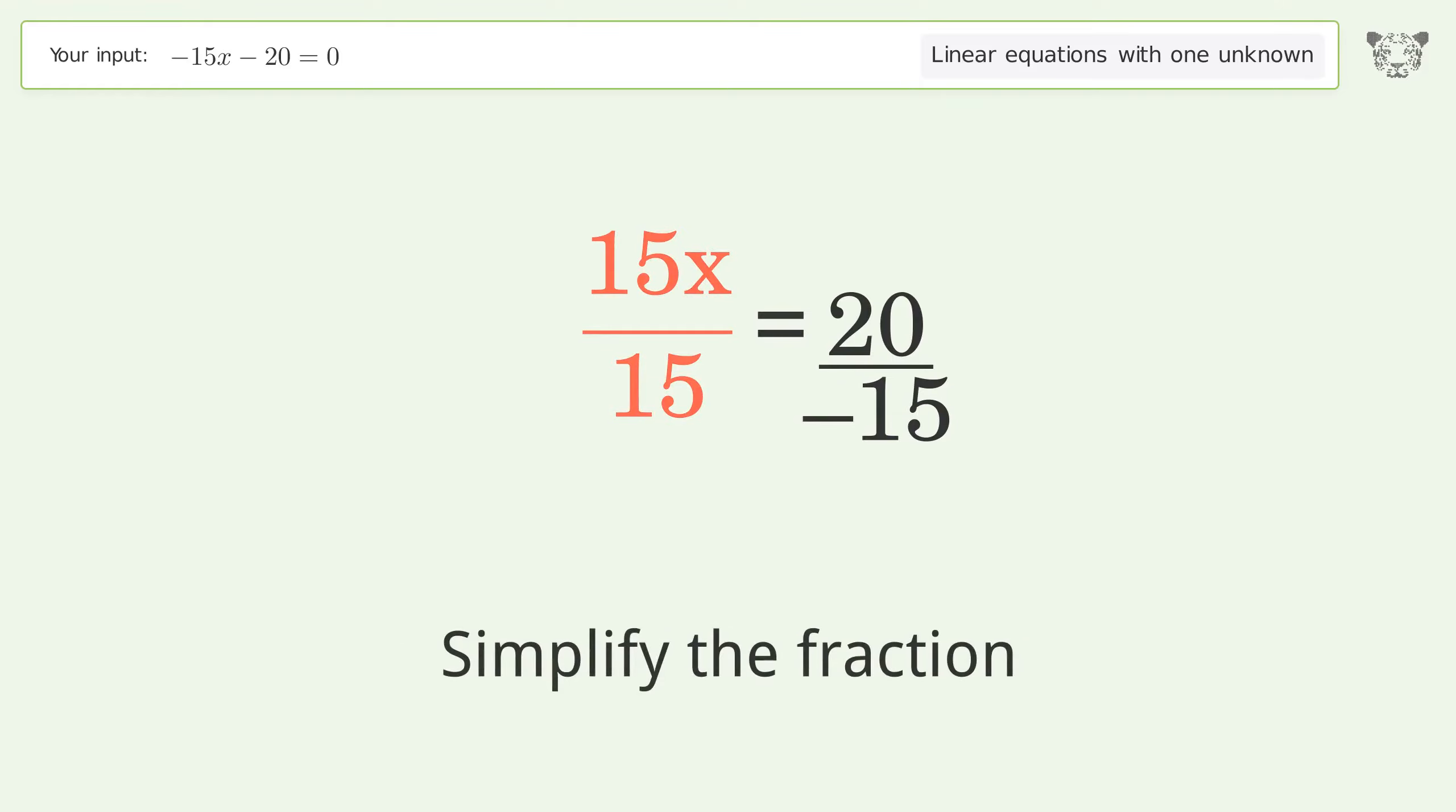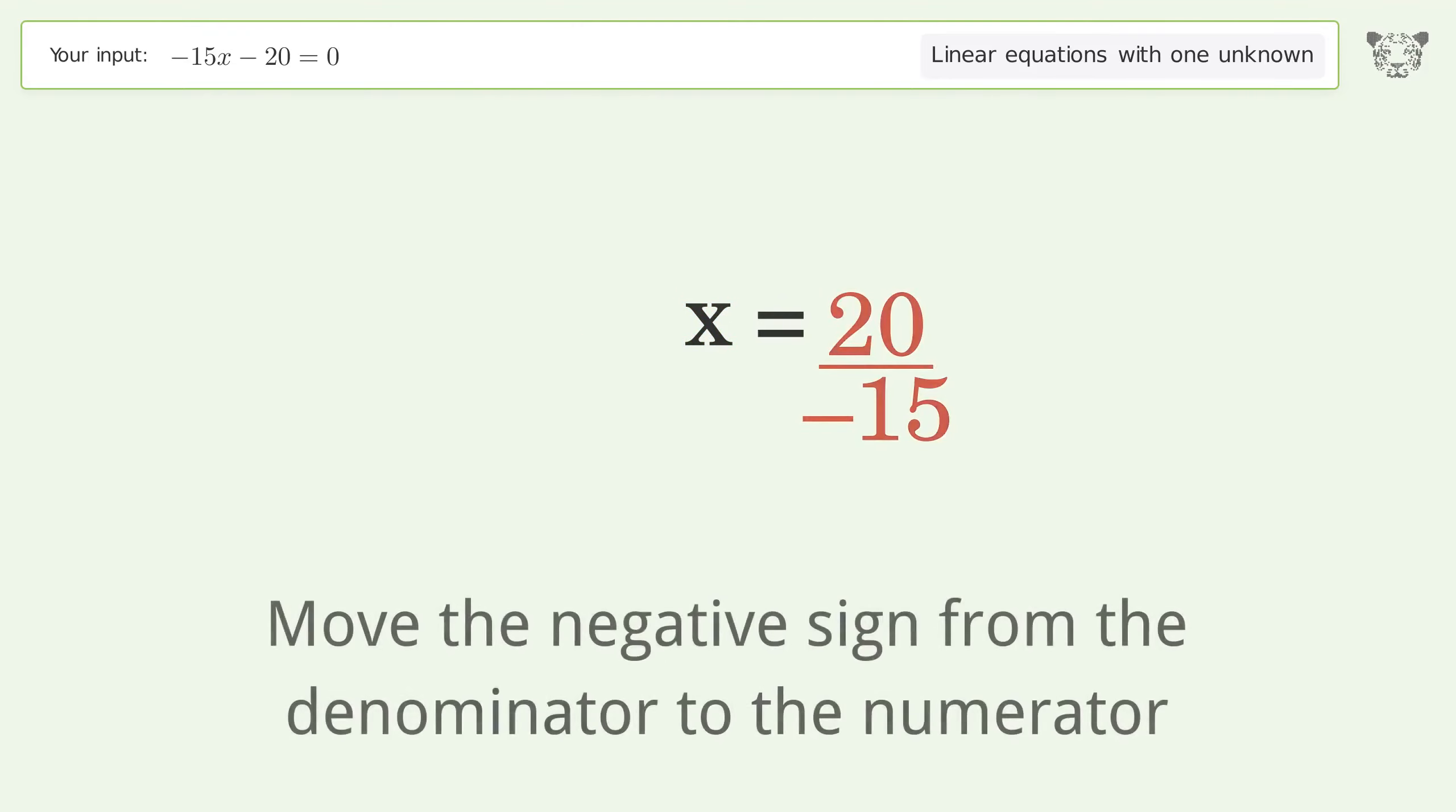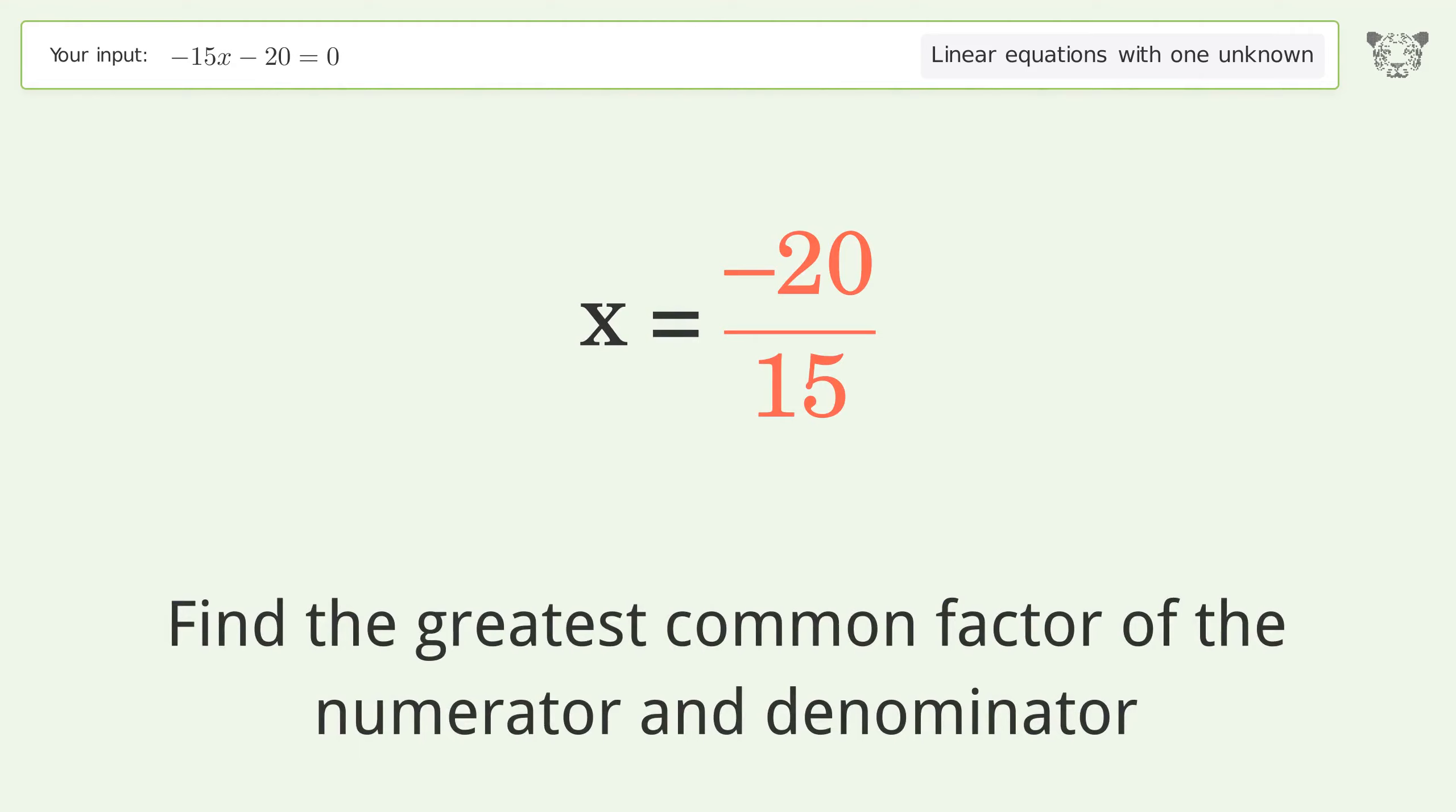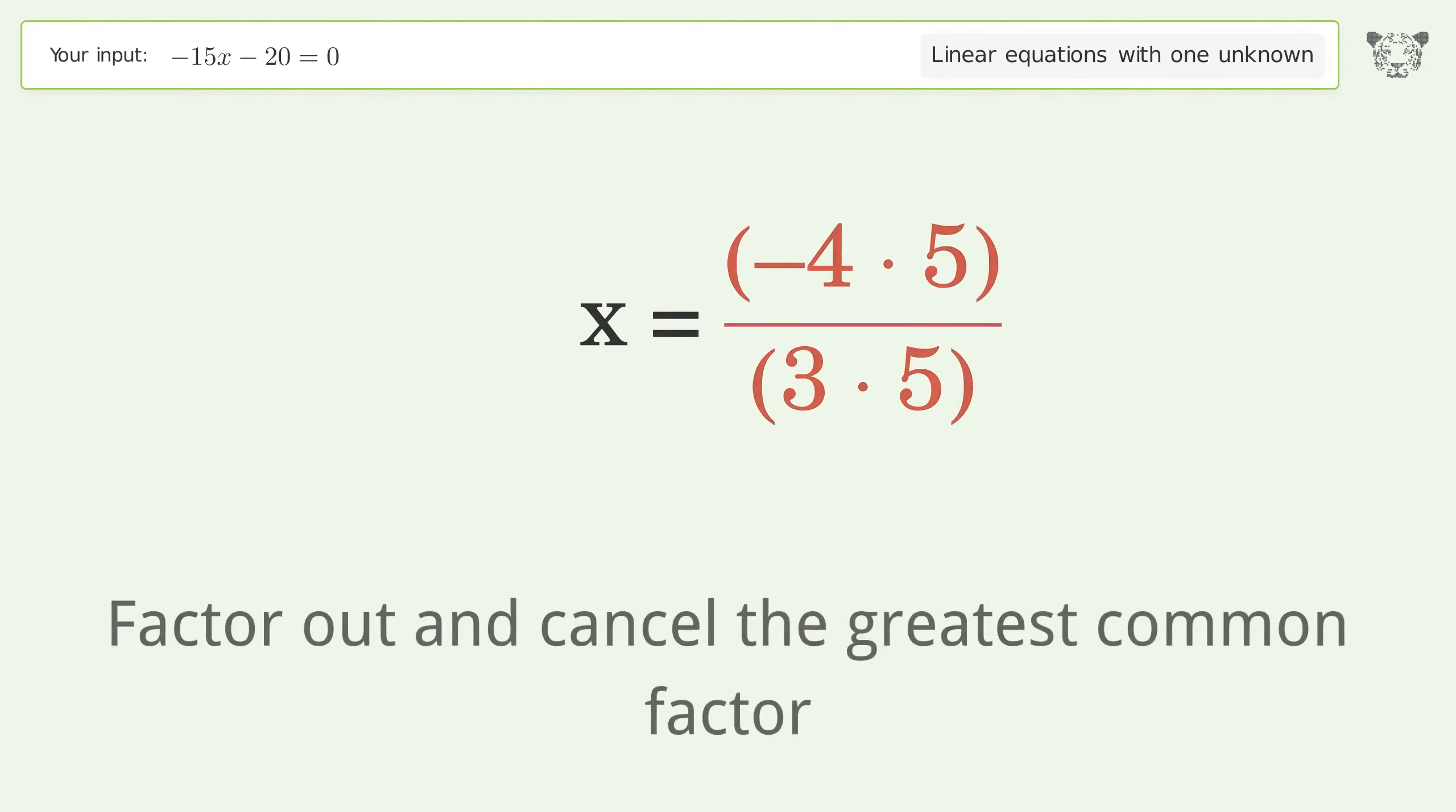Simplify the fraction. Move the negative sign from the denominator to the numerator. Find the greatest common factor of the numerator and denominator. Factor out and cancel the greatest common factor.